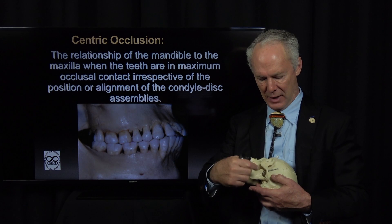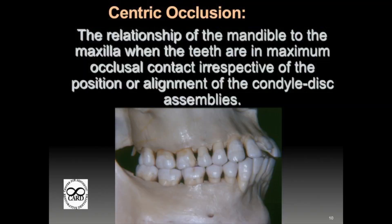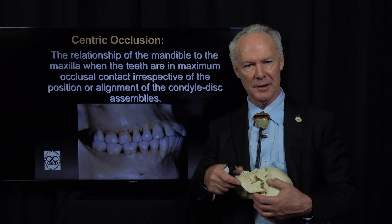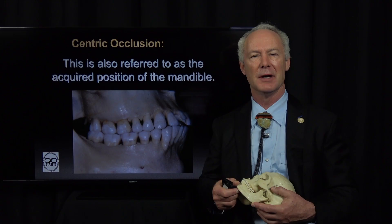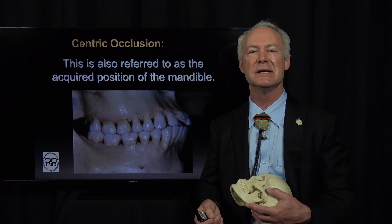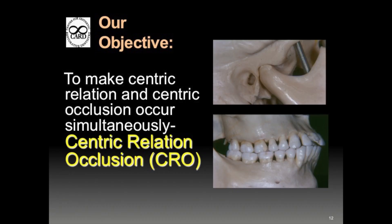Centric occlusion has nothing to do with condylar position. It only has to do with tooth position. Centric occlusion is a relationship of the mandible to the maxilla when the teeth are in maximum occlusal contact, irrespective of the position or alignment of the condyle disc assemblies. Centric occlusion is just bite — bite down, bite together. This is also referred to as the acquired position of the mandible. It's when the teeth are in maximum contact.